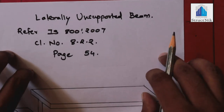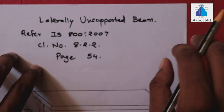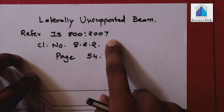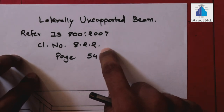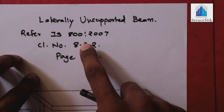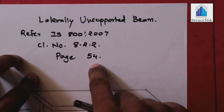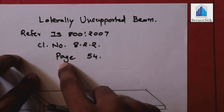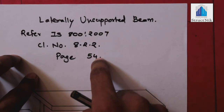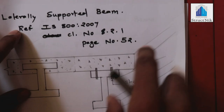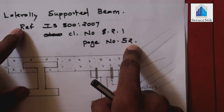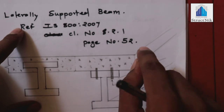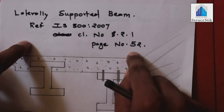Now we will go to the second part, which is the laterally unsupported beam. There are formulas and design procedures for this, also given in IS800, clause number 8.2.2, which is on page number 54. The design steps for laterally unsupported beams are on page 54, and for laterally supported beams they are on page 52.